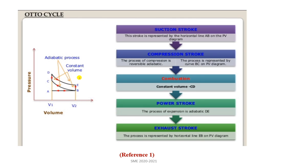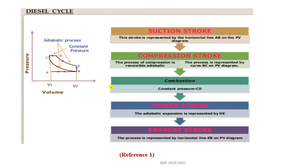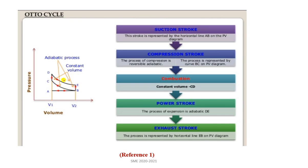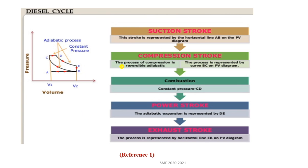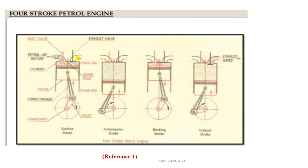On the pressure-volume diagram, we can see how there are four strokes in petrol and diesel engines. The Otto cycle is a constant volume cycle. The Diesel cycle has four cyclic processes, of which two are constant pressure processes and two are adiabatic processes. The P-V diagram shows how pressure and volume increase, decrease, and are interdependent.